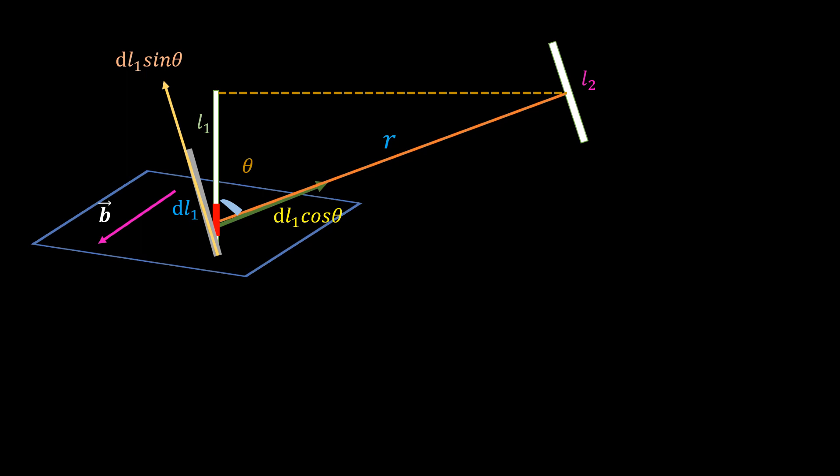So we can see that the magnitude of the field B felt by the second wire is directly proportional to dL1 sin θ.